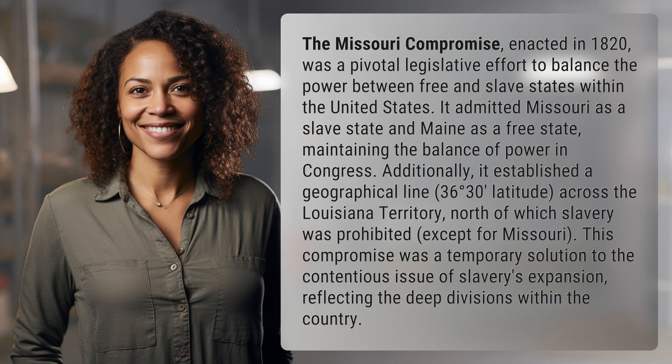It admitted Missouri as a slave state and Maine as a free state, maintaining the balance of power in Congress. Additionally, it established a geographical line at 36 degrees 30 minutes latitude across the Louisiana Territory, north of which slavery was prohibited, except for Missouri.